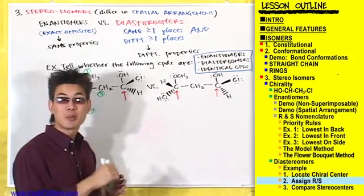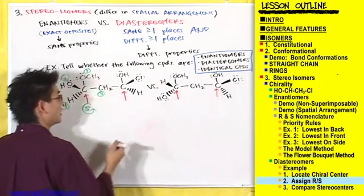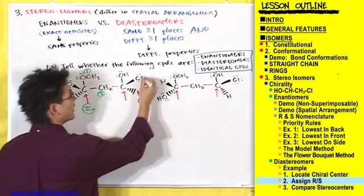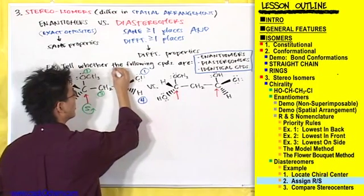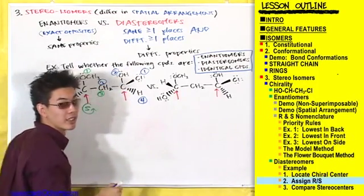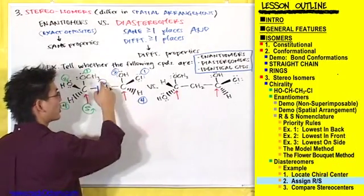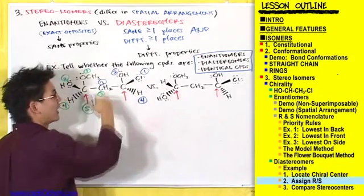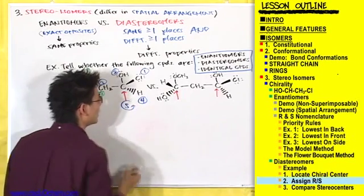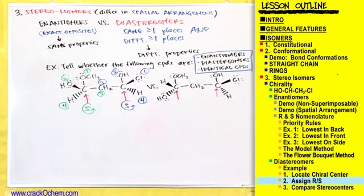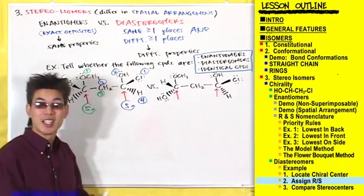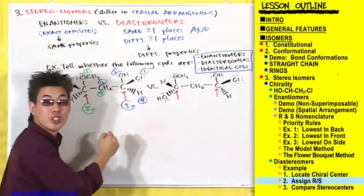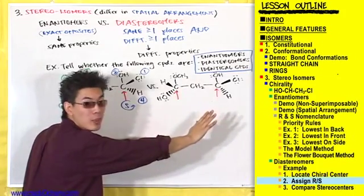Let's assign priorities to the second chiral center. We've got a hydrogen here — that's automatically number four. Chlorine, oxygen, and carbon: chlorine is the highest so he gets number one, oxygen gets number two, and this carbon gets number three. We've got one, two, three in a counterclockwise formation again, and the lowest priority group is facing the back — so this one is also S. So we're looking at a compound with two chiral centers: one that's S and one that's also S.